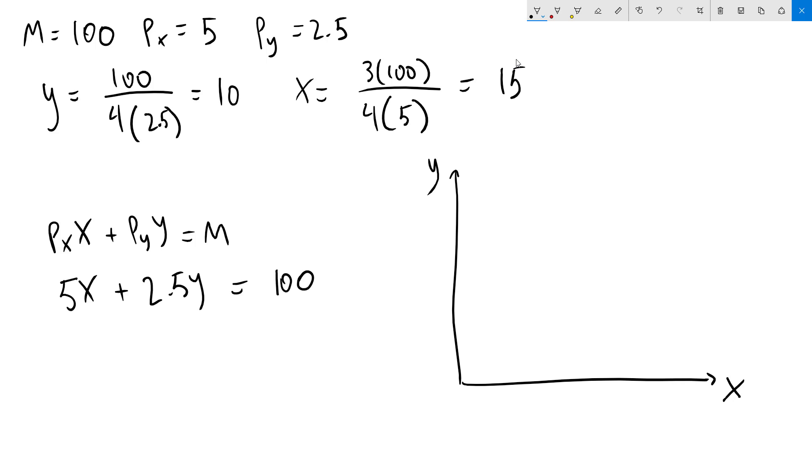To figure out the y-intercept for our budget line, we can plug in 0 for x, which gives us 2.5y equals 100. y equals 100 over 2.5, which is 40.